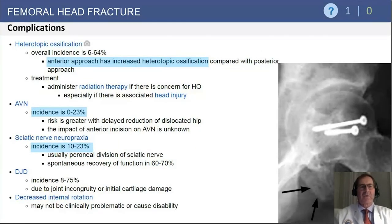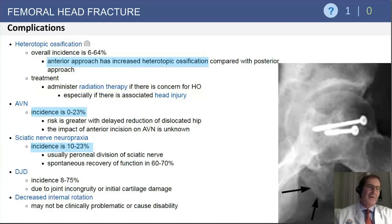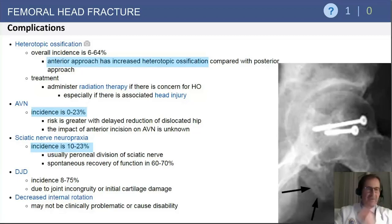Complications associated with these fractures include a high overall incidence of heterotopic ossification, which can range from 6 to 64 percent. Avascular necrosis is also common, occurring in 0 to 23 percent of cases. In patients with an associated dislocation and prolonged time to relocation, sciatic nerve neuropraxia can be found. Additionally, due to the contusive nature of these injuries to the articular cartilage, degenerative osteoarthritis is a very frequent late sequela.